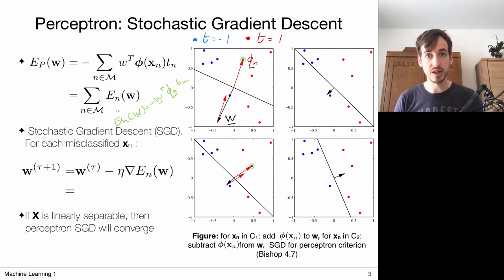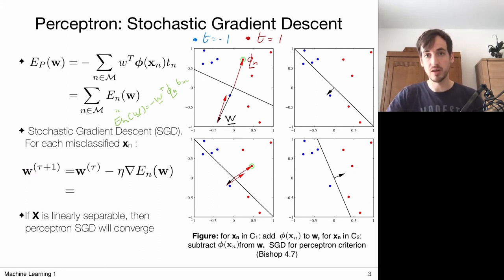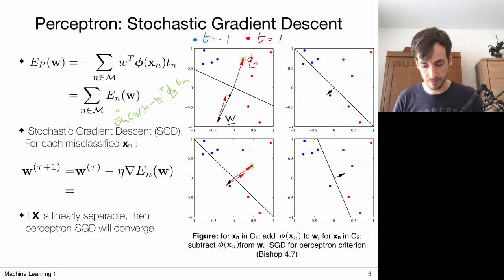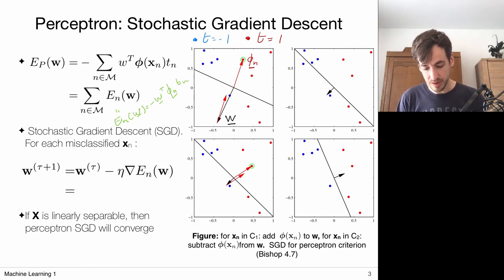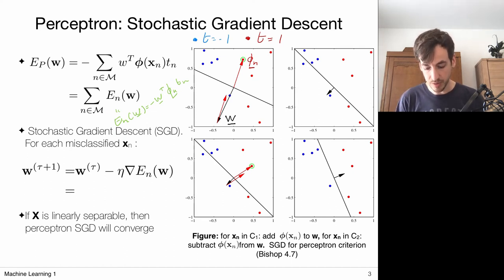We want to update W such that maybe next time this would be a correctly classified data point. We can determine whenever a point is misclassified, giving us set M, which defines the perceptron criterion to minimize. From optimization theory, we can optimize functions via gradient descent — changing the model parameters W by taking a step along the negative gradient direction, walking downhill this error landscape. This perceptron error breaks down into a sum of individual errors, making it a good candidate for stochastic gradient descent: instead of minimizing everything at once, we do it step by step, evaluating the error for one data point and then updating.